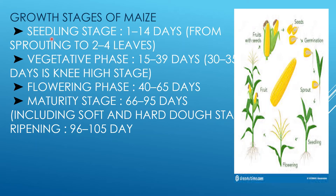Maize has five growth stages. The first is the seedling stage, from 1 to 14 days, with sprouting of 2 to 4 leaves. The second is the vegetative phase, from 15 to 39 days, where the plant is in the knee-high stage. The third is the flowering phase at 40 to 65 days, involving tasseling. The fourth is the maturity stage from 66 to 95 days, including soft and hard dough stages, where cobs, tassels, and silks are present.